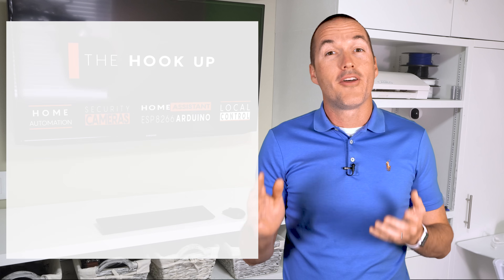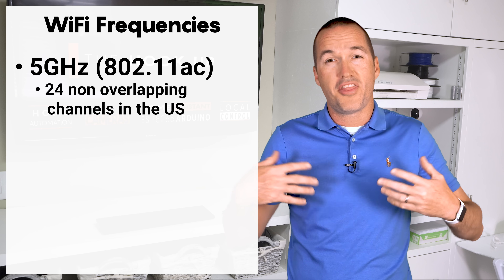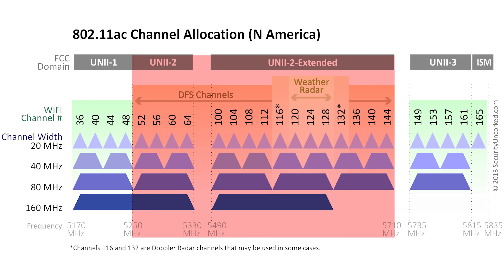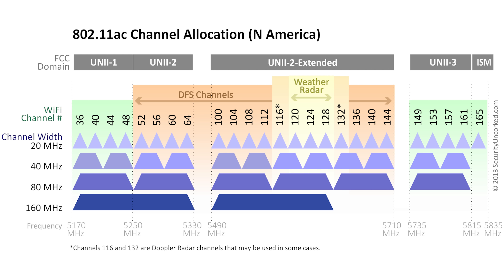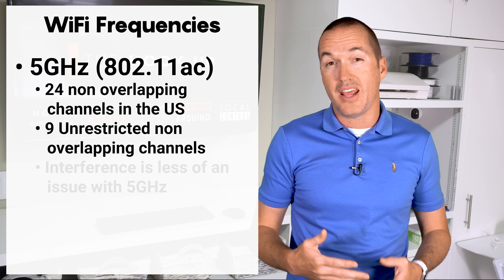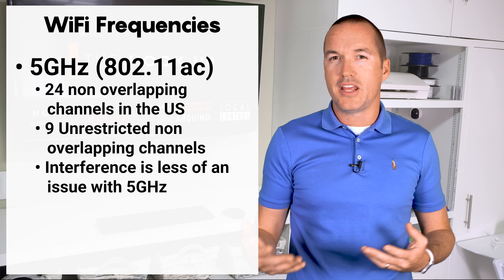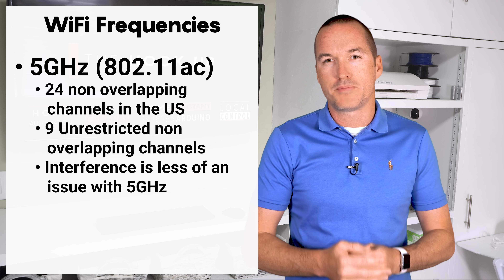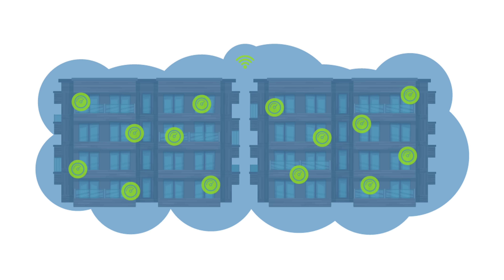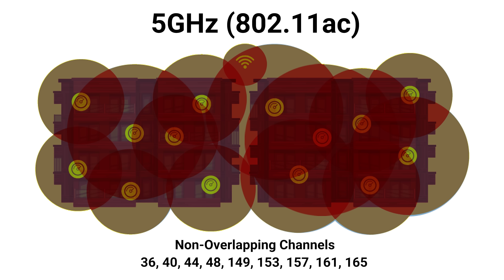For 5GHz wifi there are 24 non-overlapping channels, so it should theoretically be easier to find a channel without interference. However, a majority of those channels have restrictions for when and where they can be used, and a large chunk are DFS channels — meaning you can't manually select them because they could interfere with other services like military radar. Still, because the 5GHz band has a higher rate of attenuation and therefore a lower range, wifi congestion and interference is usually less of a problem, and you probably won't need to manually select a 5GHz channel unless you live in a very densely populated area like an apartment complex.